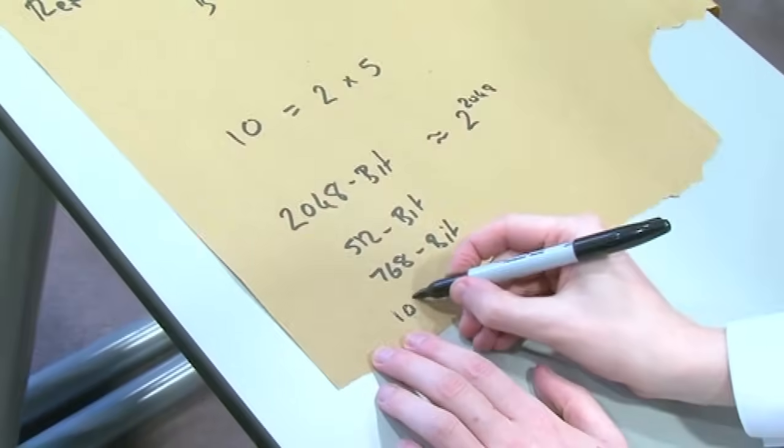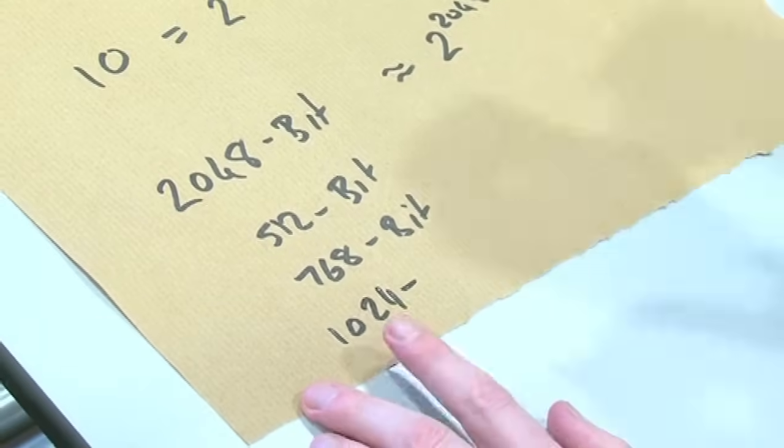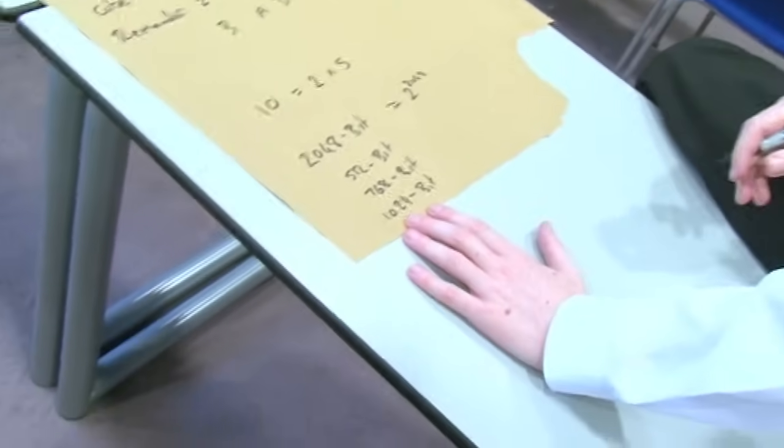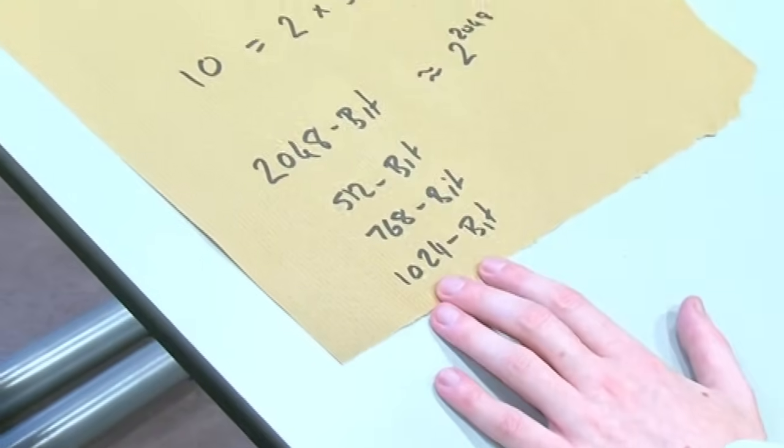And they said that to break what we use now, which is about 1024, would take thousands of times longer. But given the speed of technology, they reckon that this sort of code, 1024 bit, could be broken within a few years, they said. They said that a few years ago.